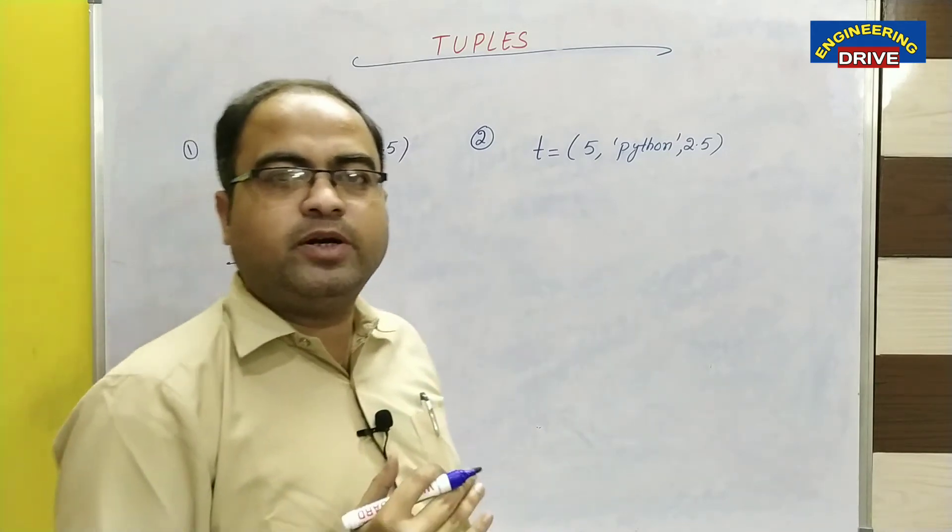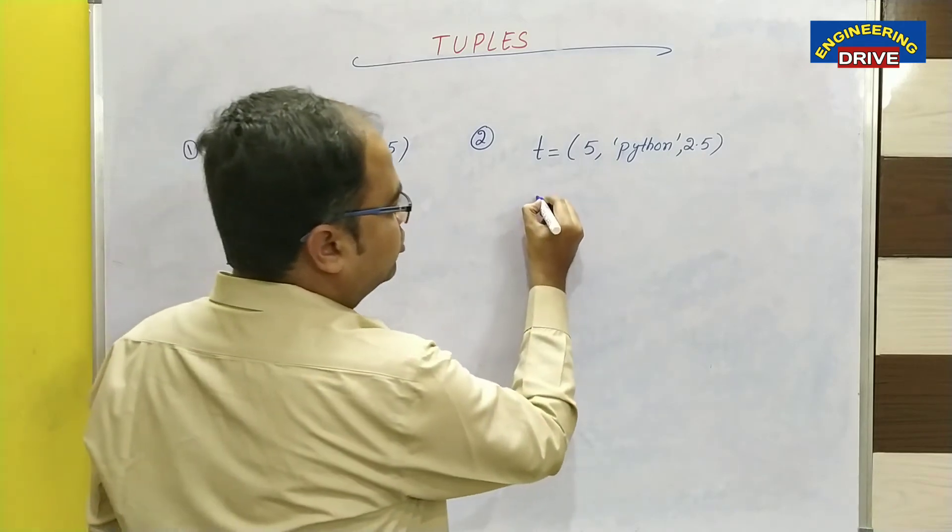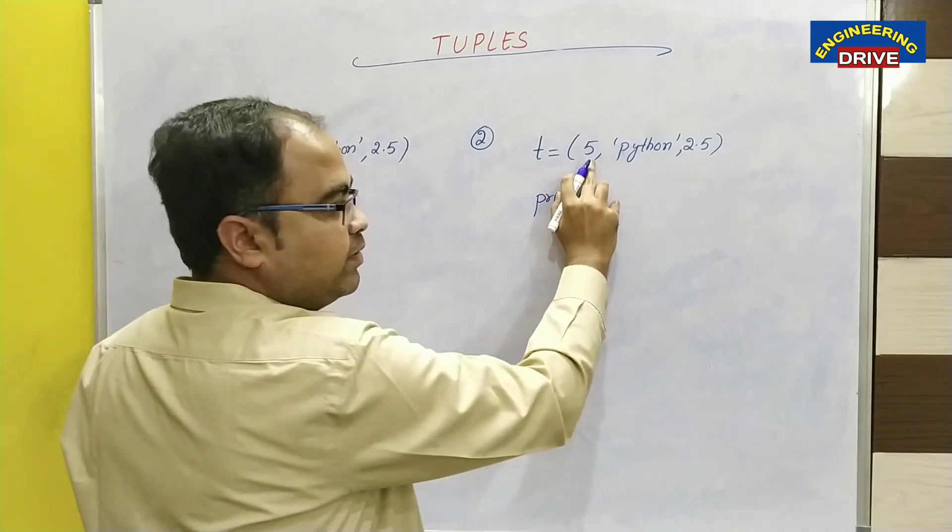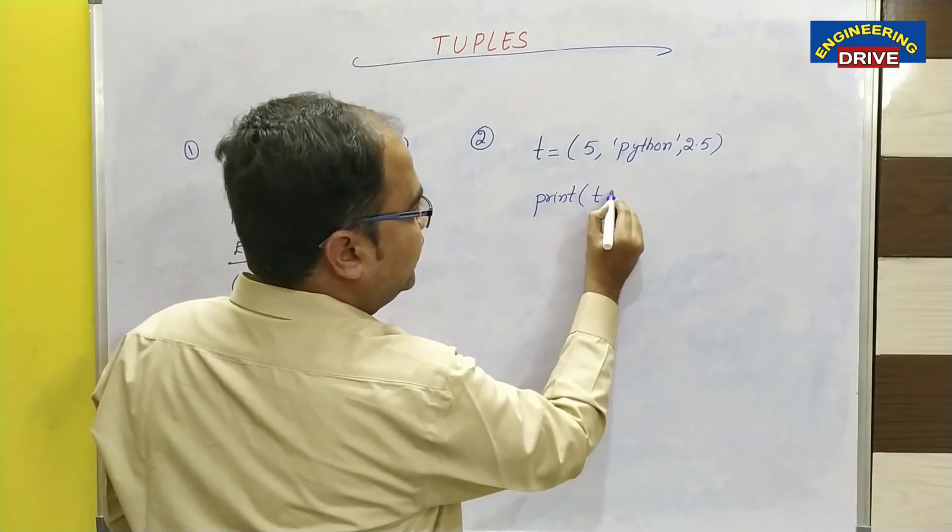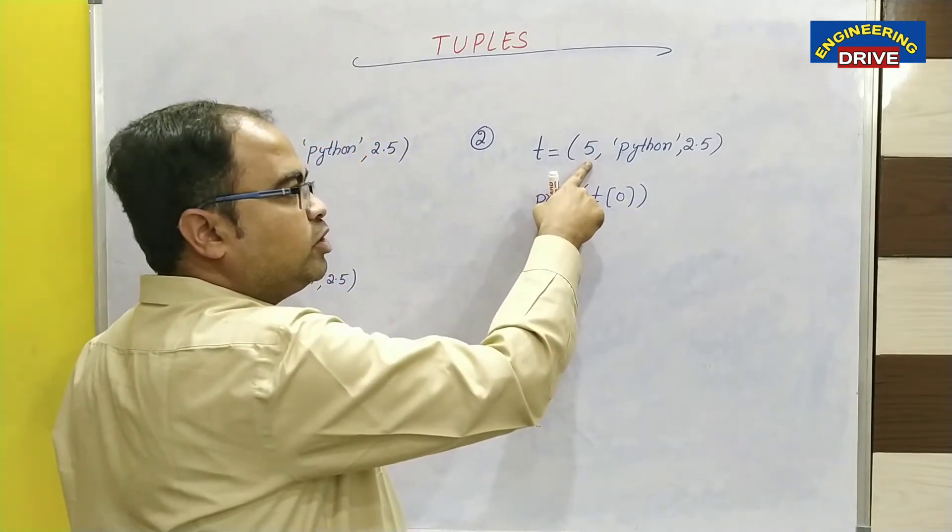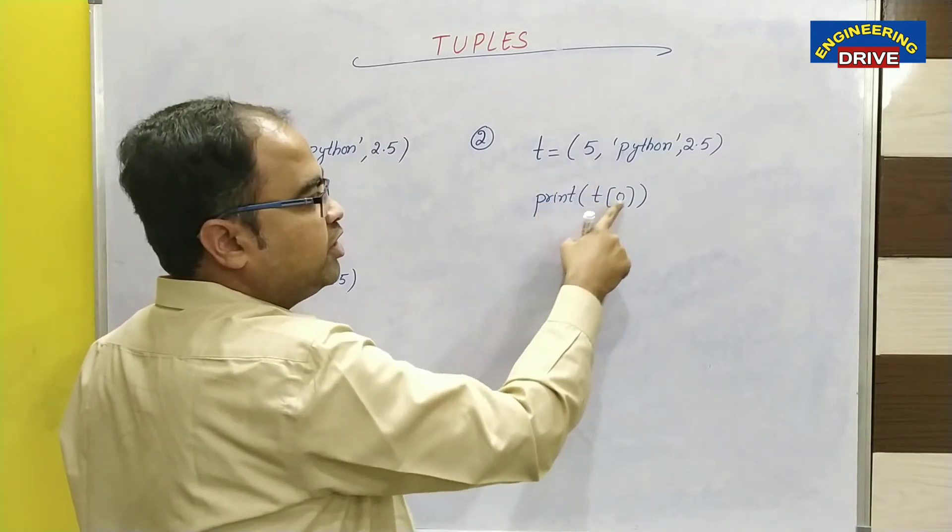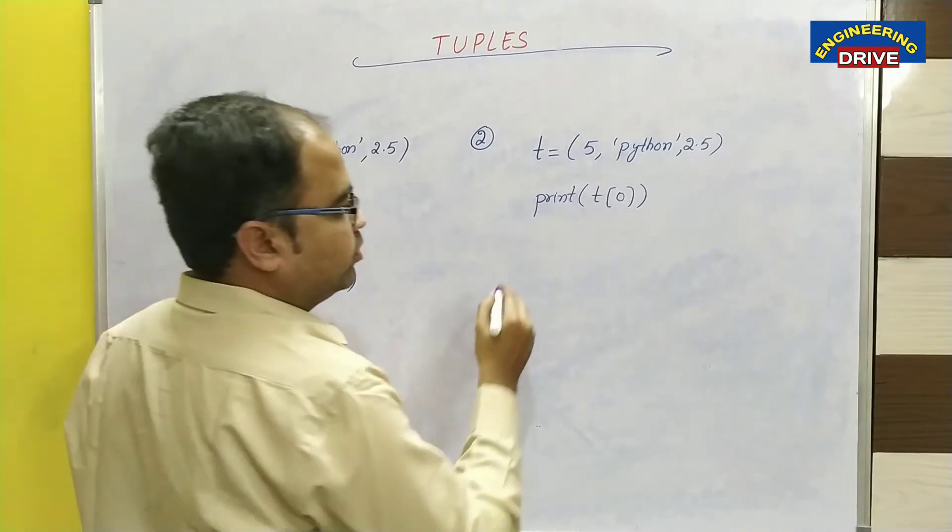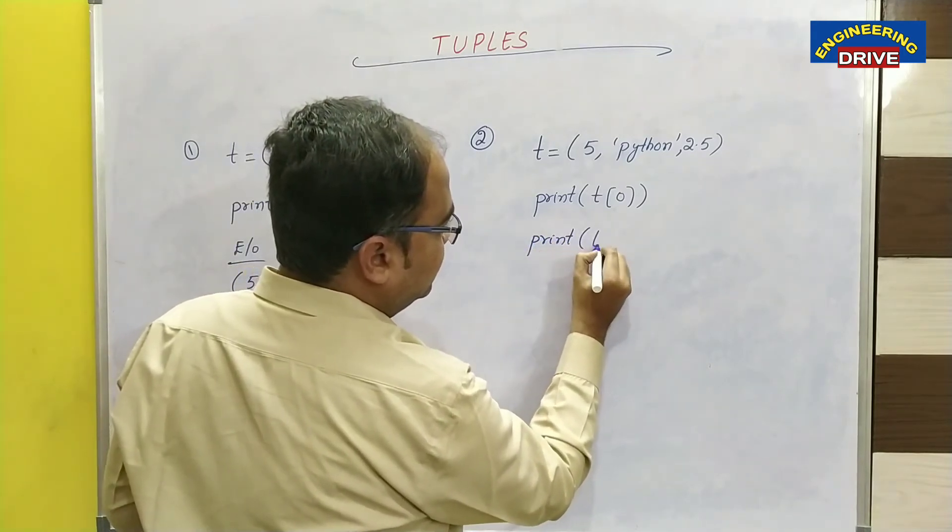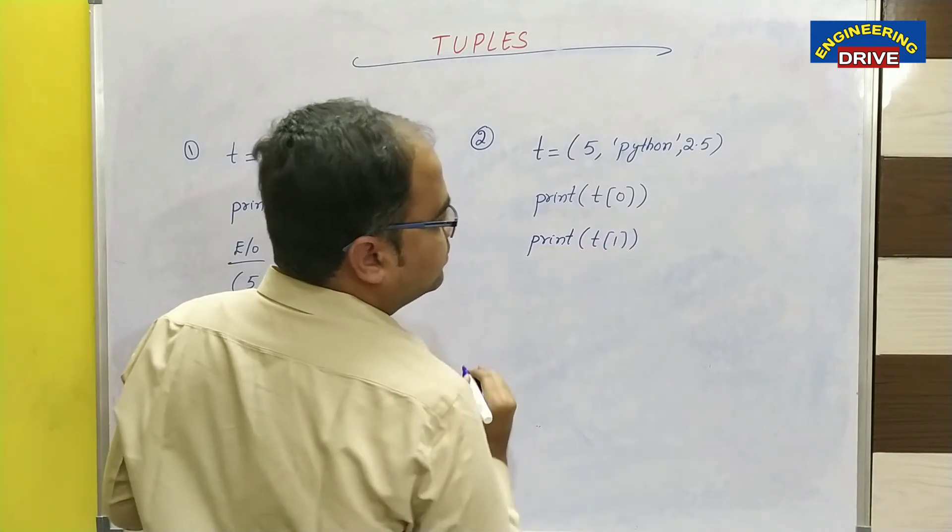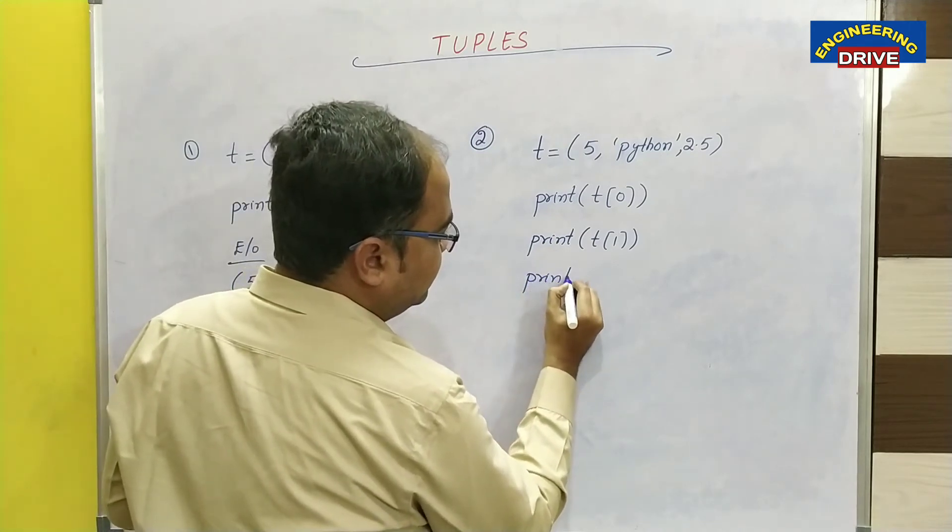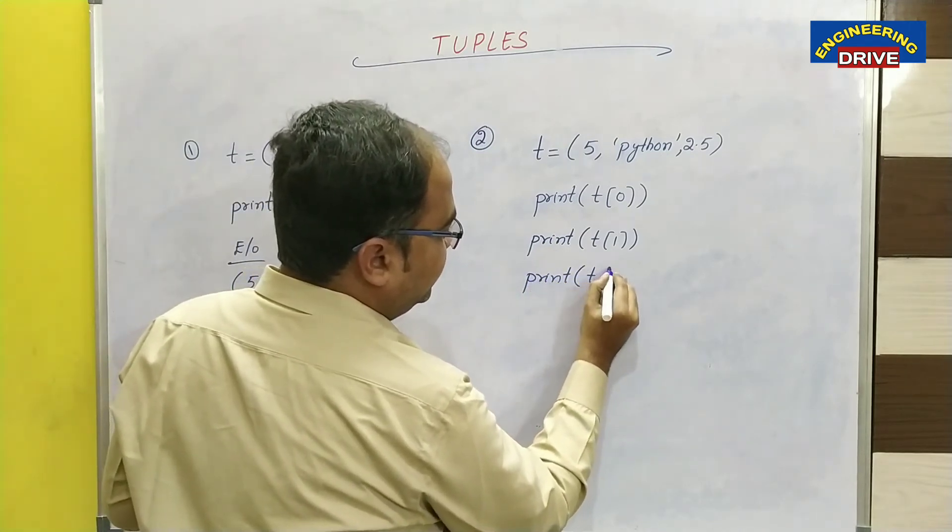Can I access those contents of my tuple? Yes, it is possible. I will make use of the function print. Now I want to display the first value of my tuple, so t of 0. The first value of the tuple will be stored at the index 0. I want to display the second value of my tuple, so print t of 1. Next I want to display the third value of my tuple, one more print function, print of t of 2.